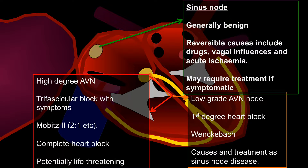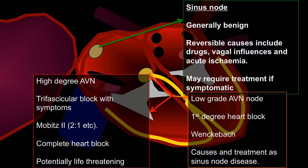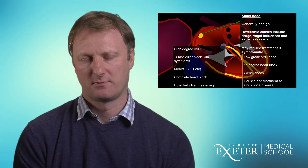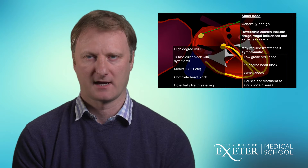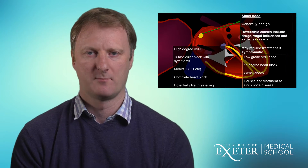Lastly we have high degree AV nodal block, which is generally second degree heart block Mobitz II where there will be two P waves for every QRS, or complete heart block which is where there is no connection between the atria and the ventricle. Both of these examples are potentially life-threatening and often require urgent or immediate treatment. I have also mentioned trifascicular block and I will show an example of this within the ECGs and explain why that can potentially be dangerous if the patient is symptomatic.